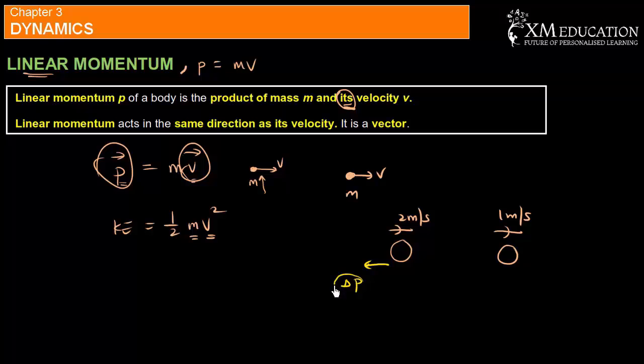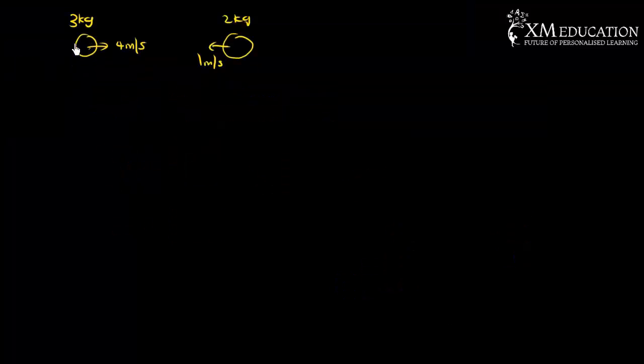If you have an object moving four meters per second to the right and an object moving at one meter per second to the left with different masses, what is the total momentum? The total momentum is mass times its velocity: three times four plus two times minus one. To the right we treat as positive, to the left as negative. So this is 12 minus 2, which is 10 kilogram meters per second. Remember, momentum is mass times velocity.